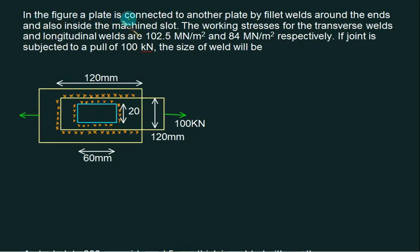In the figure, a plate is connected to another plate by fillet welds around the ends and also inside the machined slot. The working stresses for transverse weld and longitudinal welds are given. For transverse, the working stress is 102.5 MPa, and for parallel it's 84 MPa. I'm taking both values as tau 1 and tau 2.